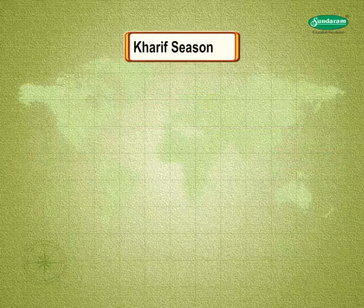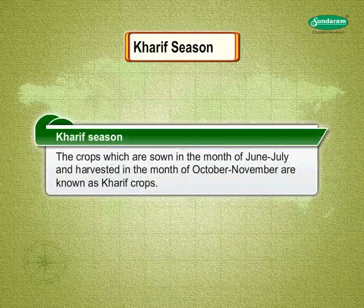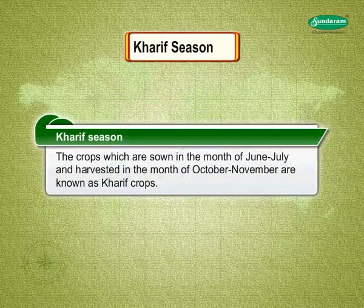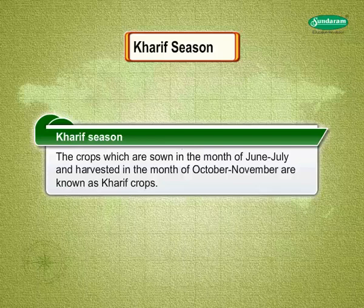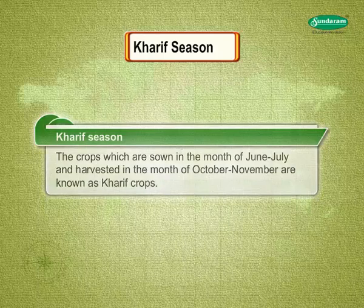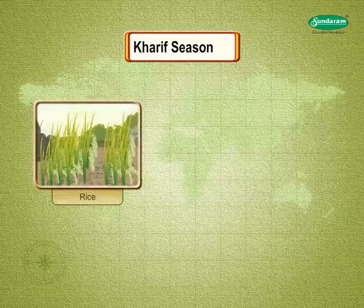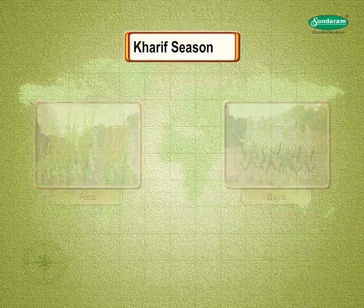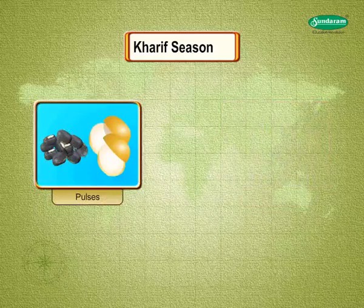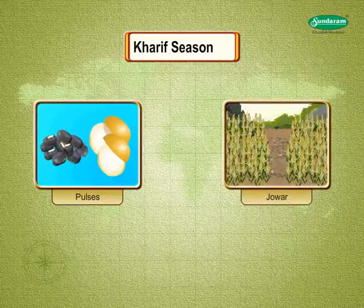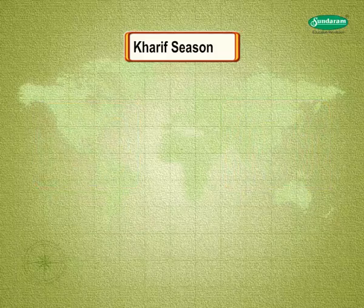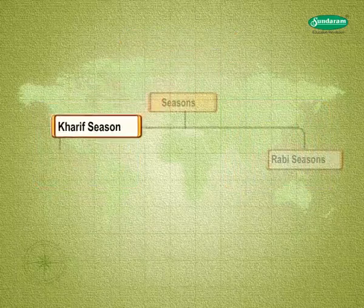Kharif season: The crops which are sown in the month of June and July and harvested in the month of October and November are known as Kharif crops. Rice, Bajra, Pulses, and Jawar are cultivated in this season.